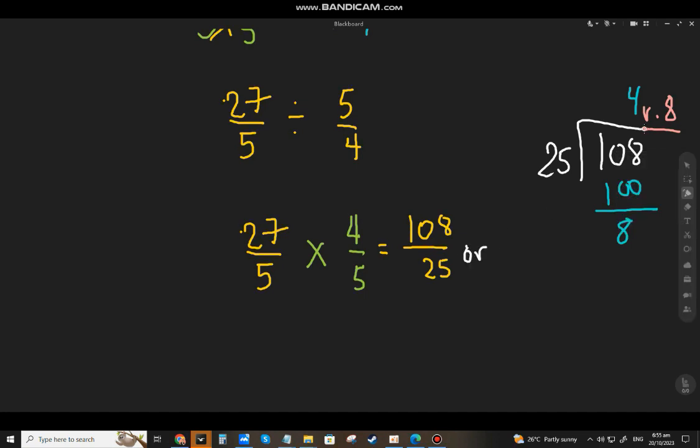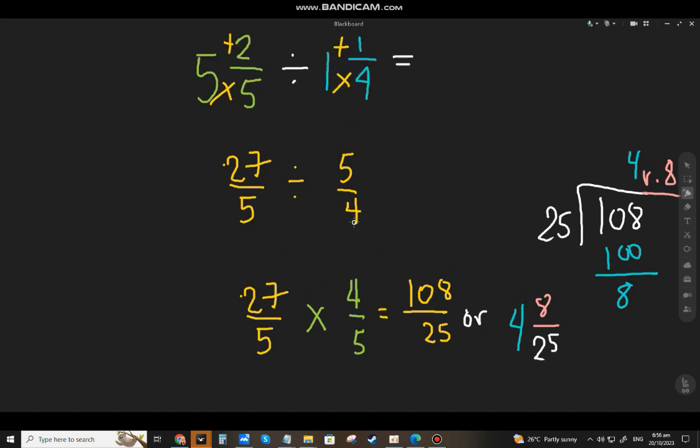The quotient will be the whole number, the remainder will be the numerator, and the divisor will be the denominator. So for the question 5 and two-fifths divided by 1 and one-fourth, the answer is 108 over 25 or 4 and 8 over 25.